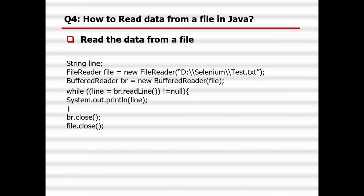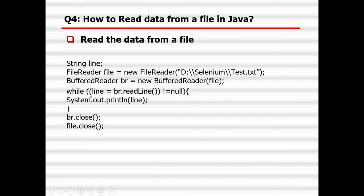How can we read data from a file? For that, we need to use the FileReader and BufferedReader classes. First, I define a string variable called line. Using the FileReader class, we create an object and provide the path of the file we want to read. Then, we use the BufferedReader class, passing the reference to the FileReader. Using a while loop and readLine, we store data line by line into the string variable and print it. After printing, we close the BufferedReader and FileReader objects respectively.